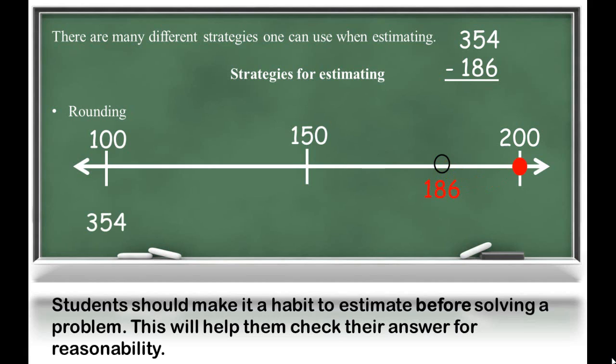Now let's look at the number 354. Where would you round that to? Correct, 400. However, some of our students may choose to round 354 to 350, which is also an acceptable estimate.